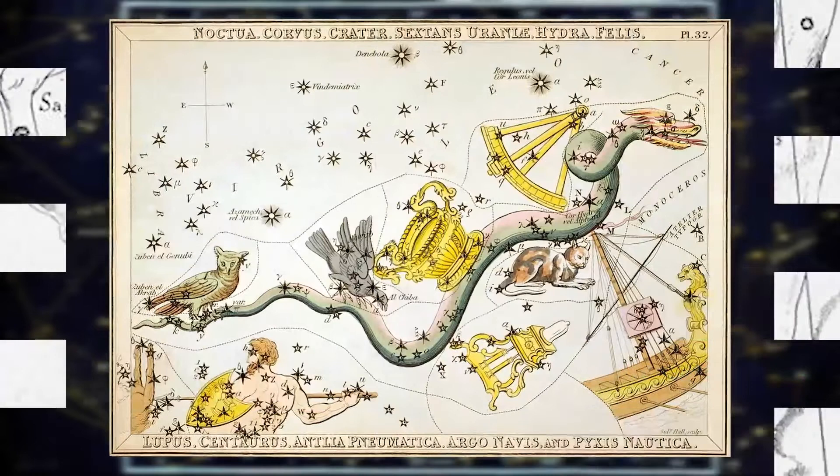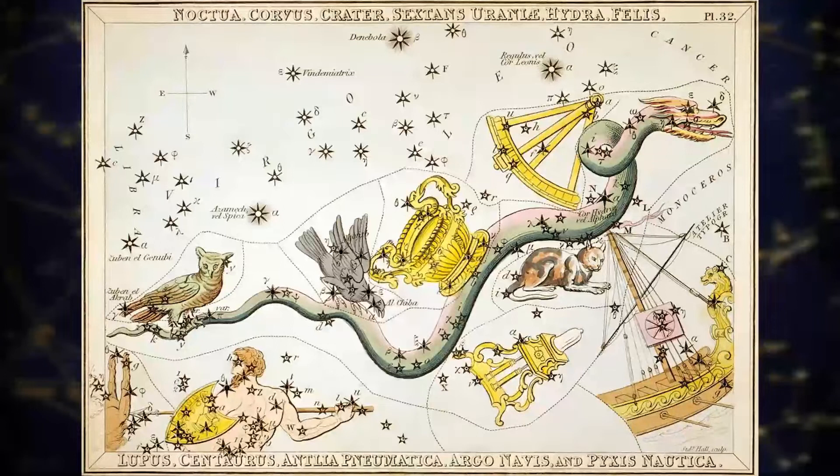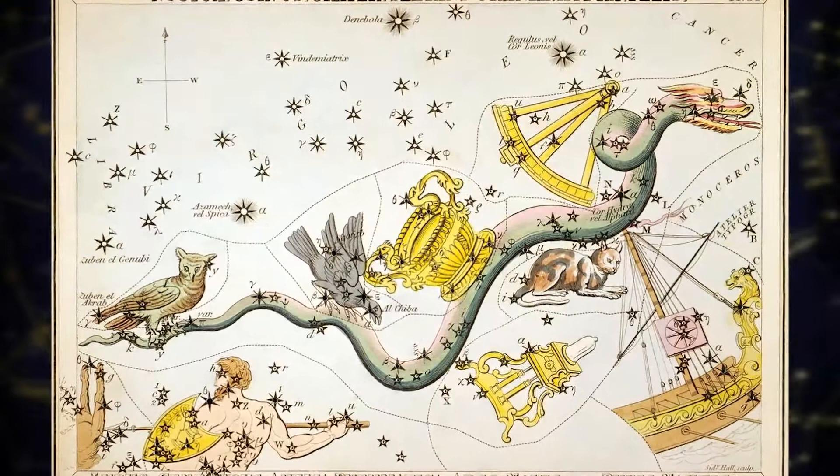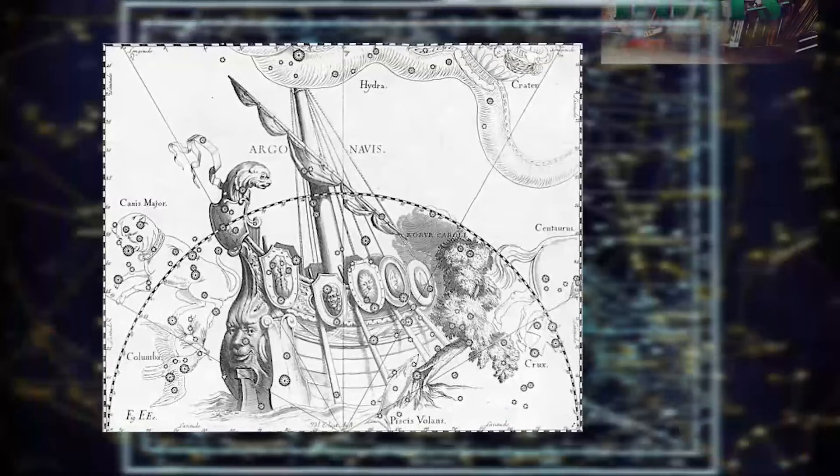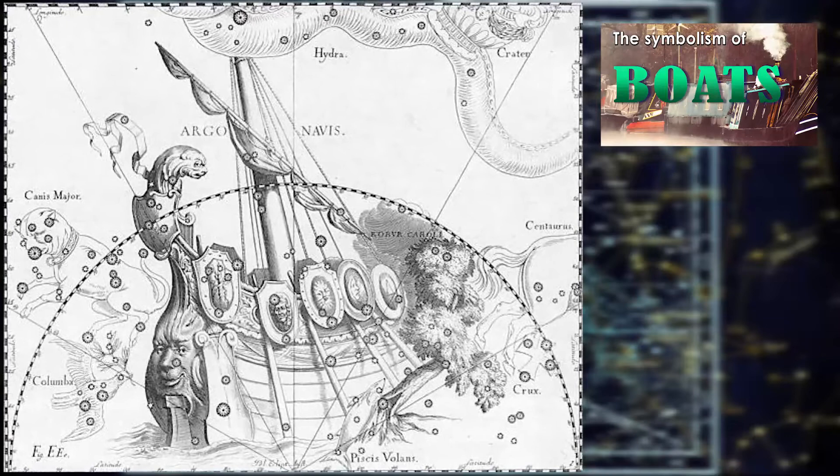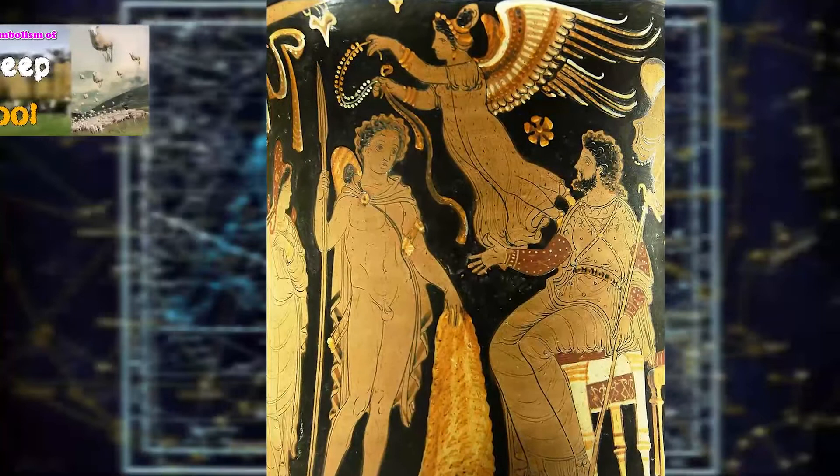Argo Navis — the mythical ship Argo. Jason uses the ship as his means of transport in his search to find the Golden Fleece. The constellation is described in two videos: Ship — the symbolism of boats, and fleece is found in the symbolism of sheep and wool.